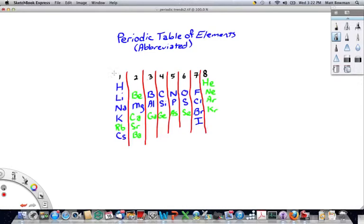Now, a couple of trends that you should be familiar with from general chemistry regarding the periodic table. One of which is electronegativity. Electronegativity is the tendency of atoms to pull electrons to themselves.